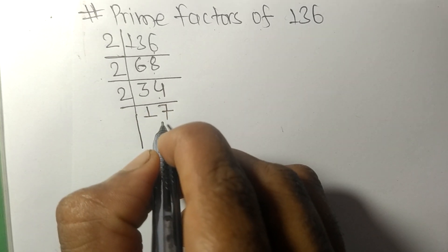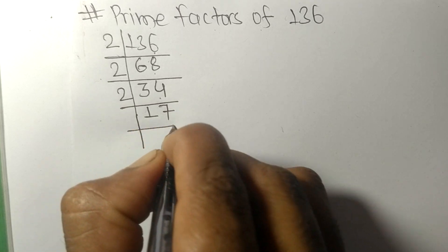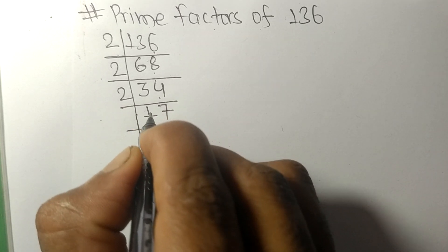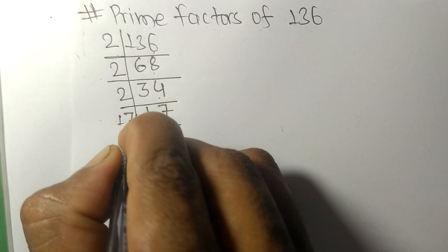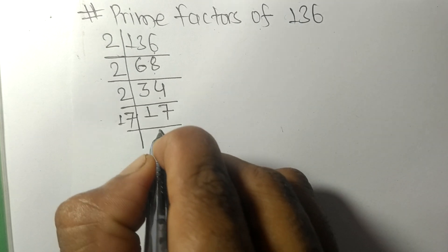So now we have 17, which is a prime number, so it is divisible by 17 itself and we get 1.